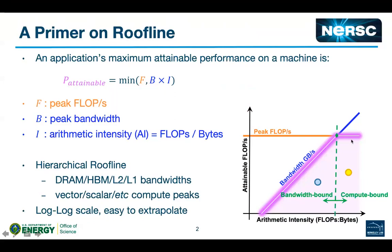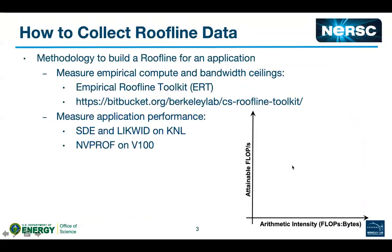You can have multiple bandwidth lines or peak flops lines on a roofline plot — for example, depending on whether you're running a vectorized or scalar code, or looking at different memory levels. To collect roofline data, we strongly recommend using ERT (the Empirical Roofline Toolkit) to measure ceilings empirically, and for application data, this talk uses SDE and LIKWID on KNL and nvprof on NVIDIA Volta GPUs.